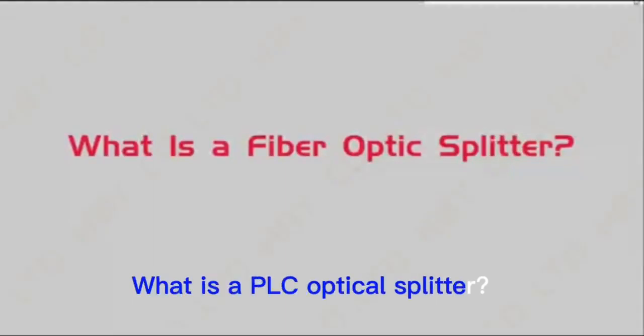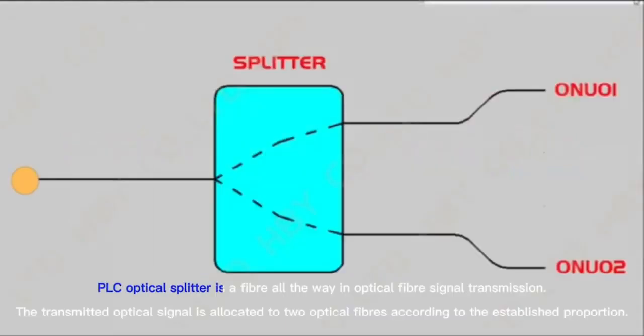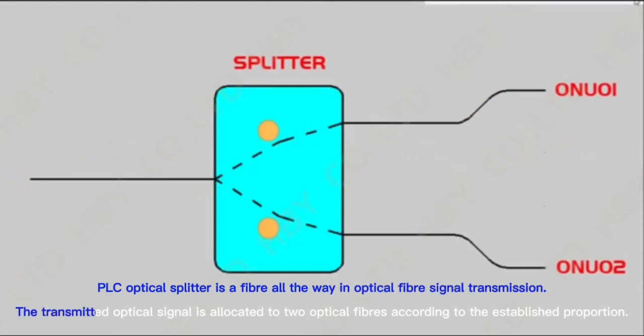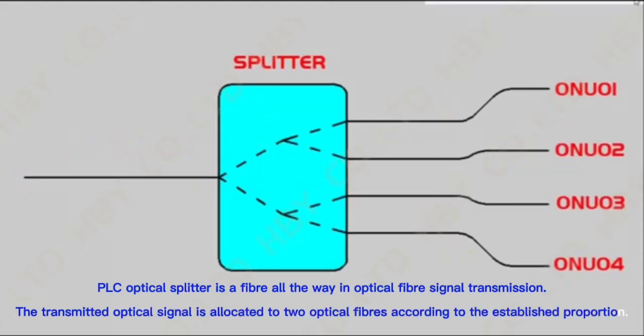What is a PLC optical splitter? A PLC optical splitter is a fiber device used in optical fiber signal transmission. The transmitted optical signal is allocated to two optical fibers according to an established proportion.